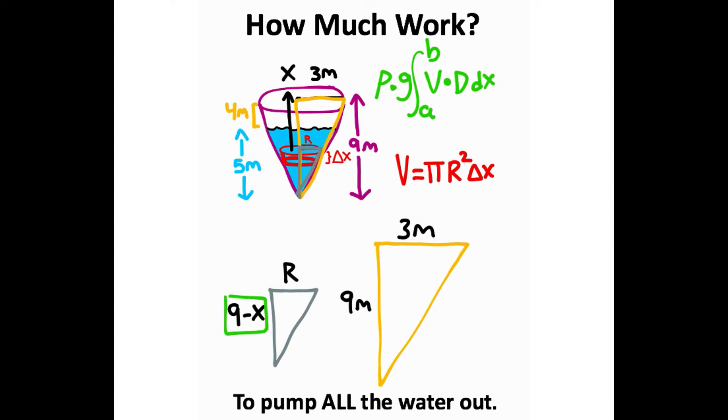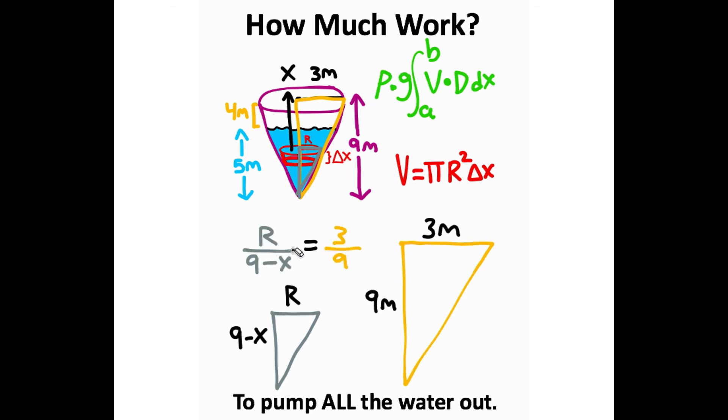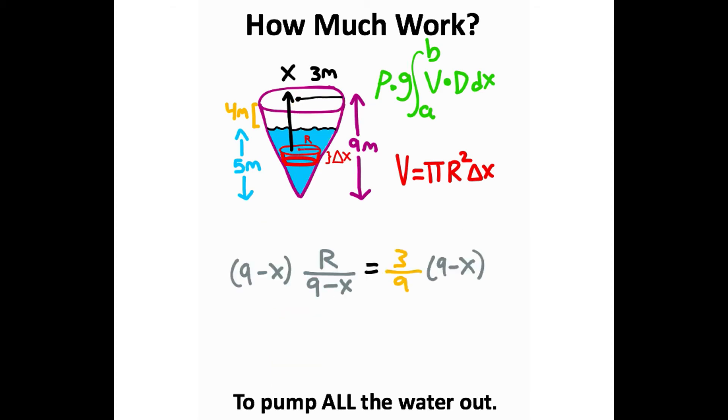The reason we have 9 minus x here is because if you take 9 and subtract off this height x, it gives you this displacement, which happens to be the adjacent side of this triangle. We can use a proportional equation between the two, where we take fractions for similar triangles: the opposite side over the adjacent side. We take 9 minus x and multiply both sides. That gets the 9 minus x to cancel, and we get this expression for our radius. We can also reduce this fraction to get one-third.